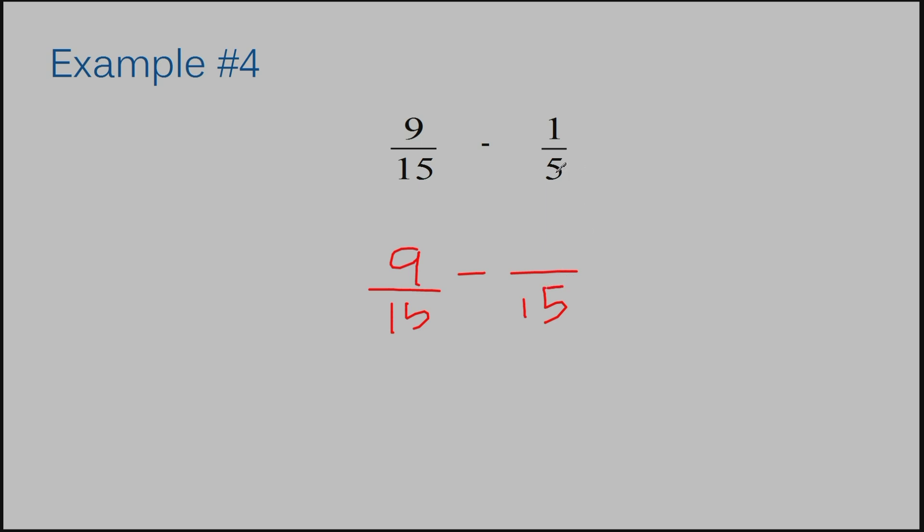Now, I ask myself, how many times does five go into fifteen? It goes into it three times. So, that means five times three is what gave me the fifteen. I need to multiply three on the top as well. So, one times three is what my numerator is made from. So, nine minus three is six. The denominator remains the same. Is there a number that can go into both six and fifteen? Yes, that would be three. So, I'm simplifying now. Six divided by three is two. Fifteen divided by three is five. So, my final answer to example number four is two-fifths.